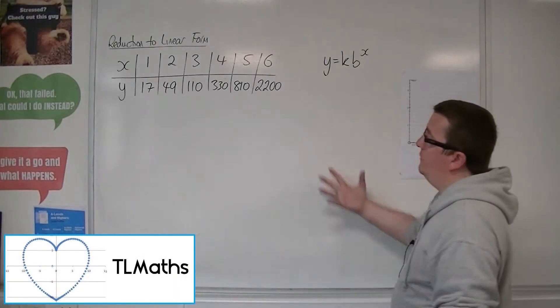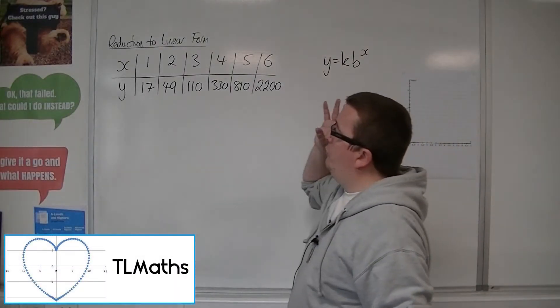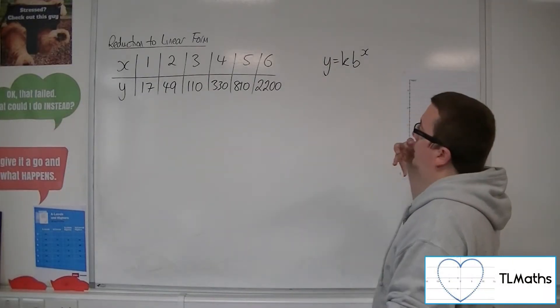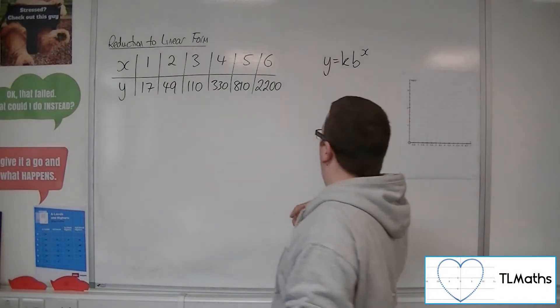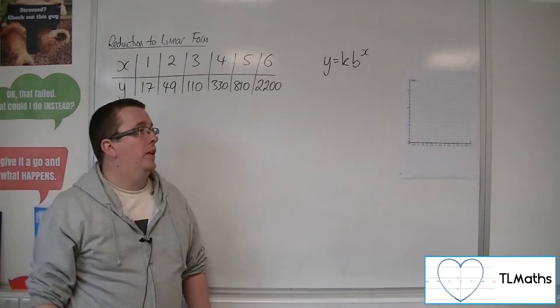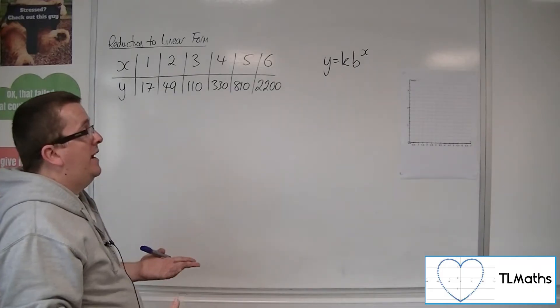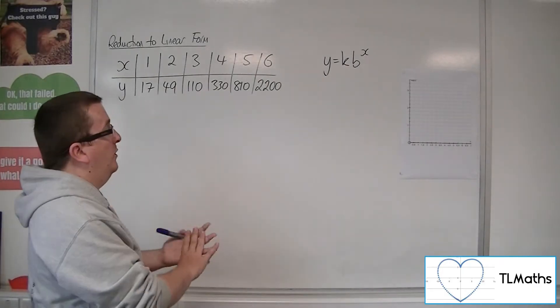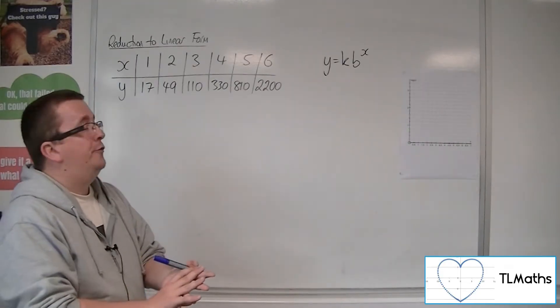So this time we have this data, so this is the original data, we've plotted it, we think that the curve that would fit the data best would be of the form y equals kb to the x, and we need to calculate as close as we can to k and b, so we want to know the actual equation of the curve.